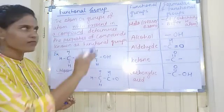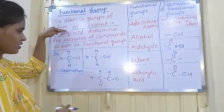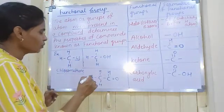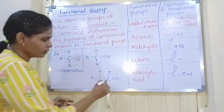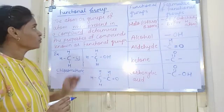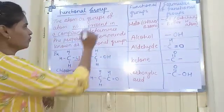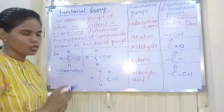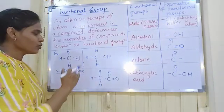That is why these are called functional groups. Looking at the definition again — 'atoms or group of atoms.' Here, chlorine is an atom, but –OH is a group of atoms, and –CHO is also a group of atoms. So atom or group of atoms, when present in a compound, determines the properties of that compound — that is a functional group.